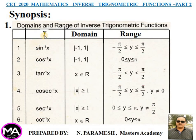Sixth: y = cot⁻¹x. Domain: x belongs to the set of real numbers. Range: open interval (0, π).